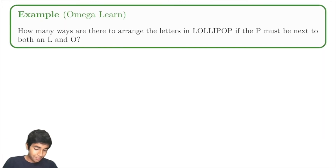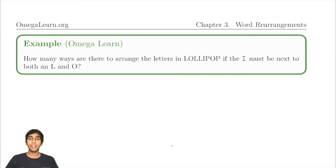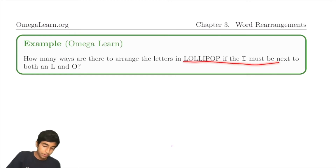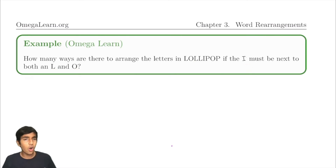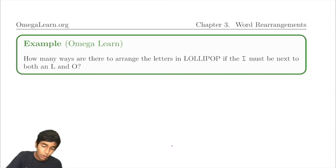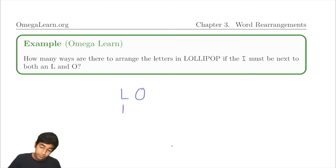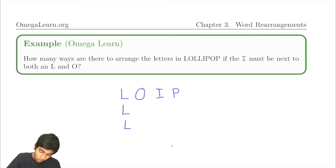Let's solve this problem: how many ways are there to arrange the letters in lollipop if the I must be next to both an L and an O? Let's do our standard trick of writing the letters in an organized fashion: L, O, L, L, I, P, O, P. So there are three L's and two P's.